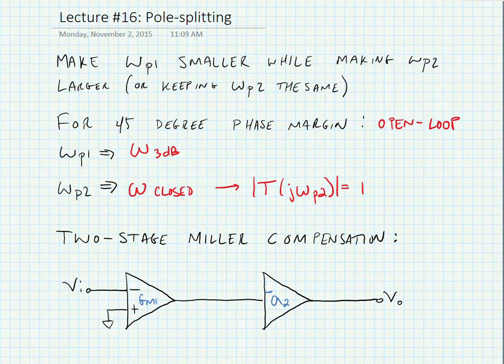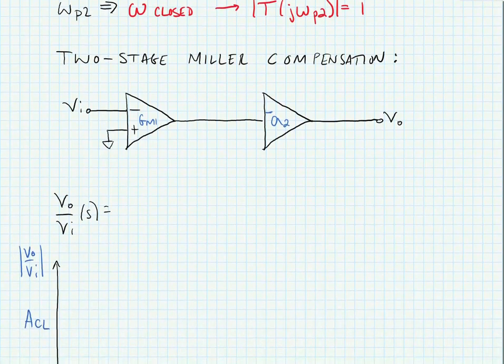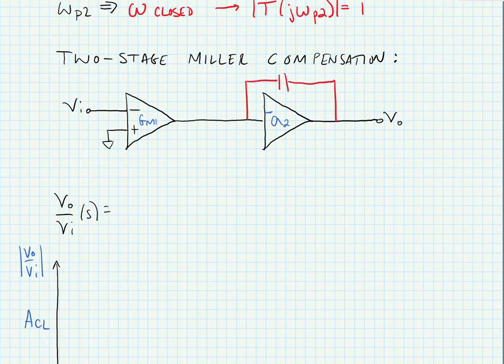Now here's our two-stage amplifier and we're going to do what's called a two-stage Miller compensation. In the Miller compensation we're going to add a capacitor around our second stage inverting gain and this is of course now a Miller capacitor we're going to call this a compensation capacitor C sub c.